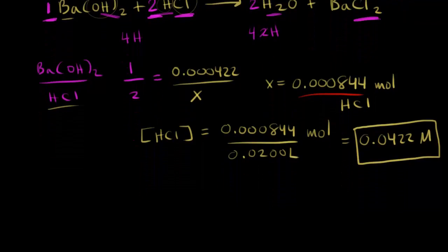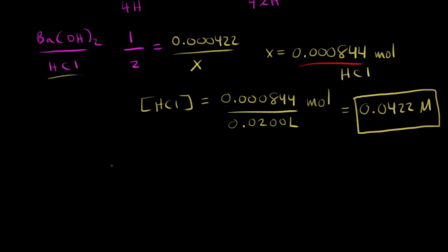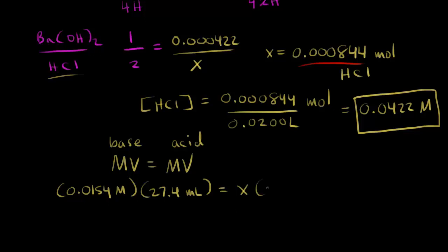Let's see what happens if you try to use MV is equal to MV, that shortcut that we learned about in the last video. So this would be MV is equal to MV. And let's do the molarity of the base times the volume of the base is equal to the molarity of the acid times the volume of the acid. So for our base, the concentration was 0.0154 molar. And the volume of base that we used was 27.4 milliliters in our titration. For the acid, we don't know what the molarity is. That's what we're trying to find in the problem. And the volume was 20.0 milliliters.